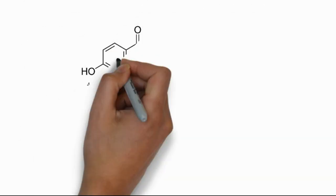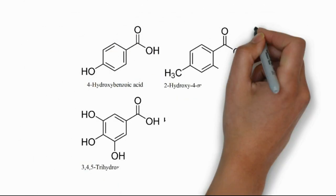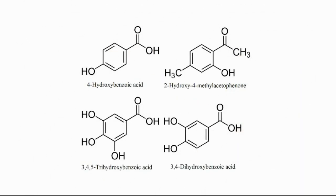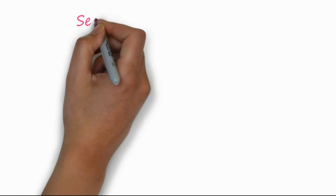Examples are phenolic antioxidants. Phenolic compounds as antioxidants are present in plants or plant food. You can see here examples such as 4-hydroxybenzoic acid, 2-hydroxy-4-methylacetophenone, 3,4,5-trihydroxybenzoic acid, and 3,4-dihydroxybenzoic acid.